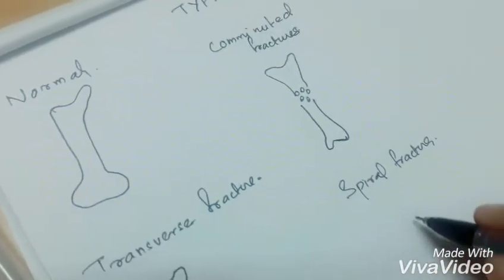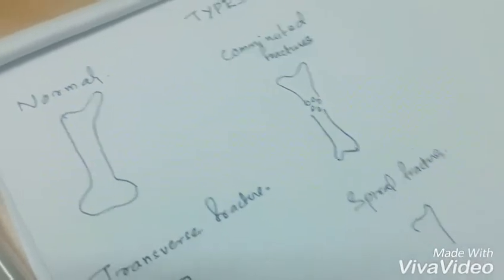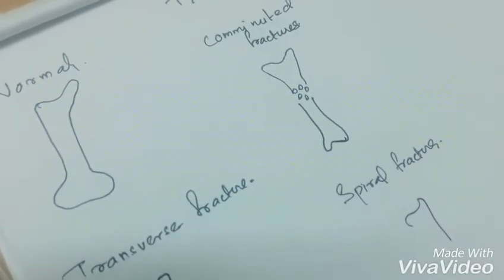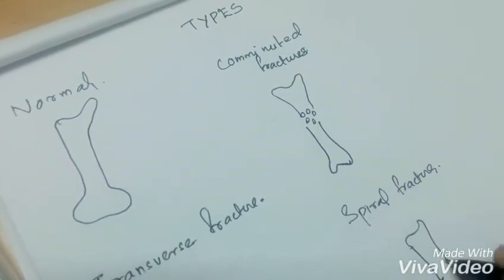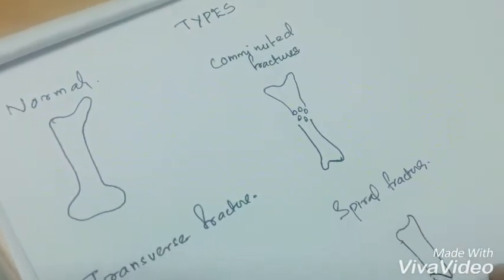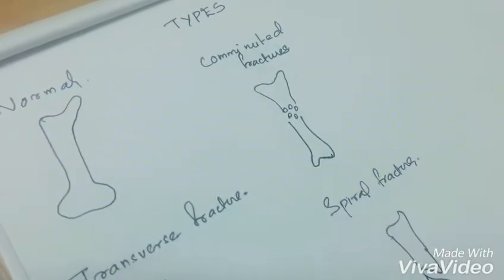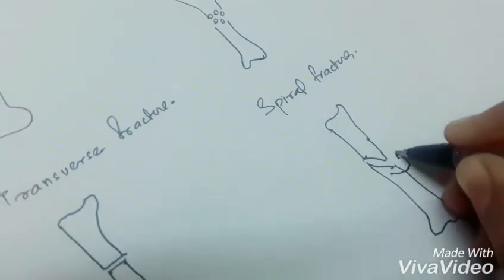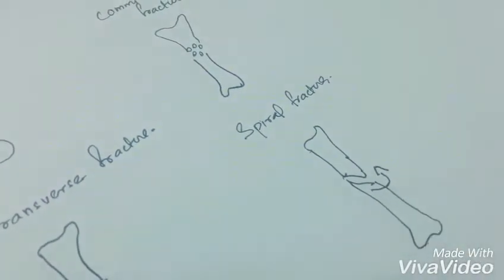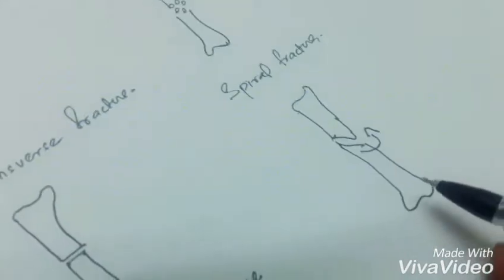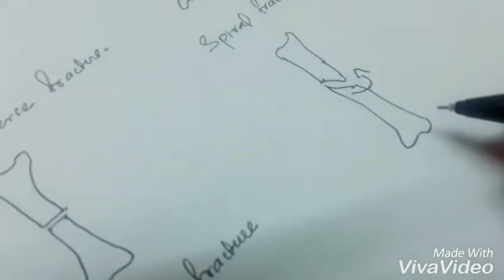Here a torque force, also called rotational force, is applied along the long axis of the bone leading to fracture. This usually occurs when the body is in movement and the extremity is arrested or fixed.